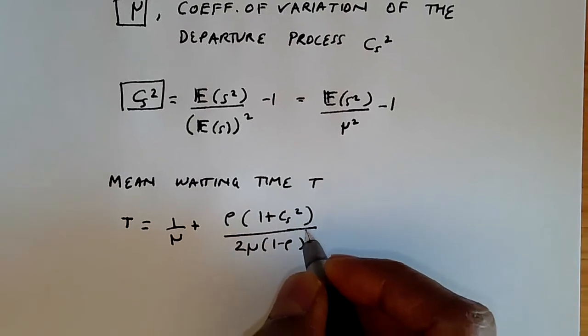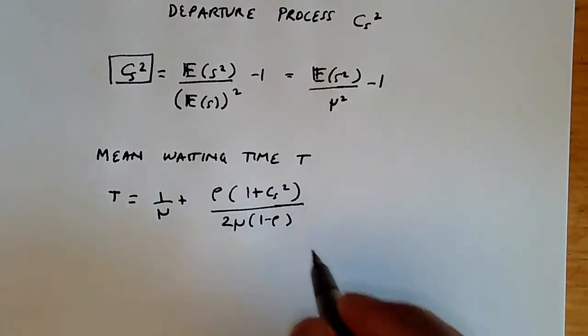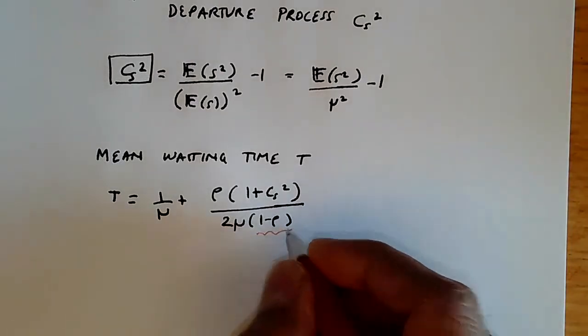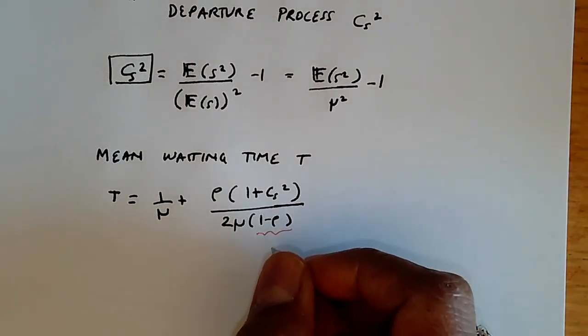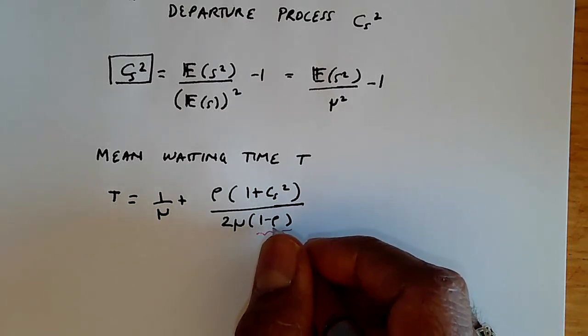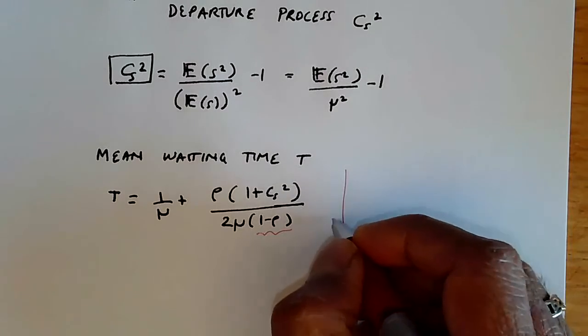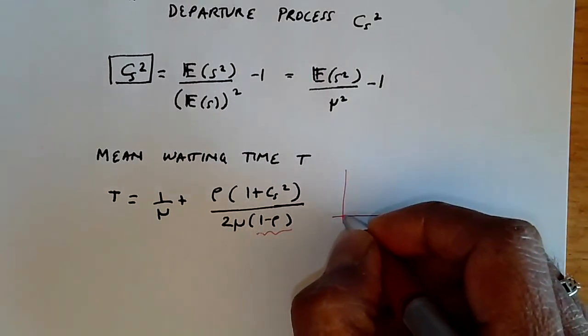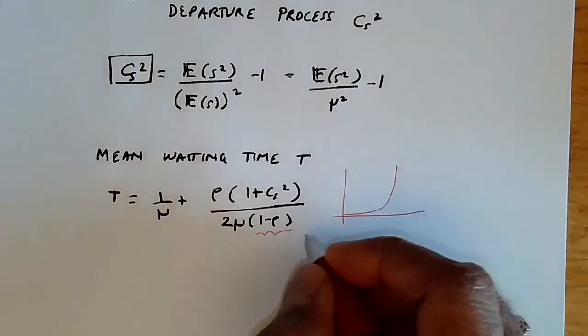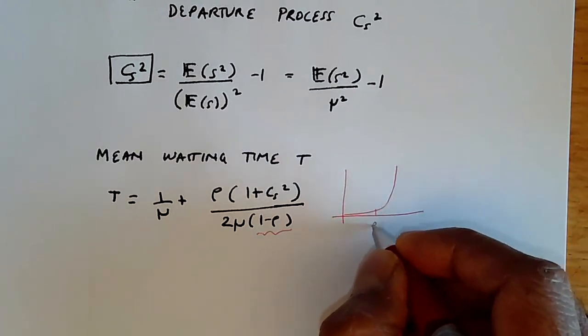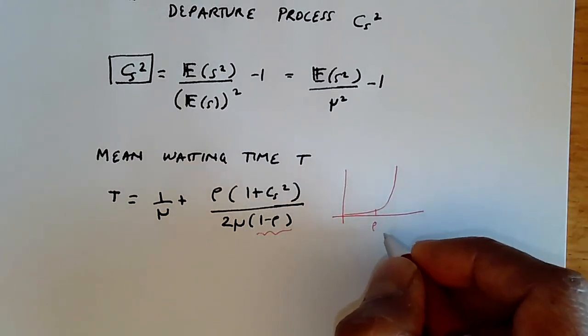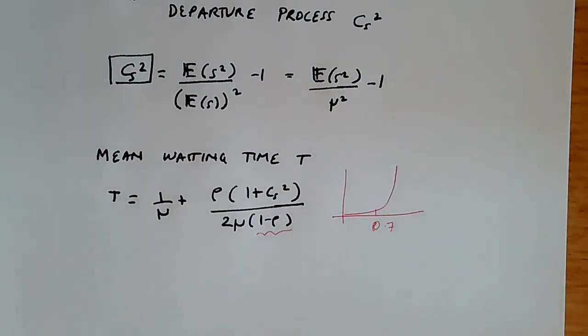What you see here is the same dependency on 1/(1-ρ) in the denominator that we saw in the M/M/1 queue. As the utilization gets closer to one, the waiting time shoots up, which is why we'd like to keep ρ lower than typically 0.7, even for the M/G/1 case, similar to the M/M/1 case.